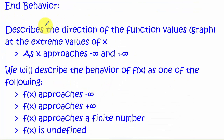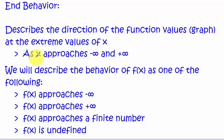End behavior describes the direction the function is heading as x is at extreme values — meaning as x approaches negative infinity, i.e., very large negative numbers, and as x approaches very large positive numbers, or positive infinity.